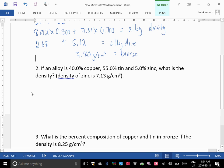So we do the density of copper, which is, in this case, it's 40%. So it would be 8.92 times 0.400. And we add that to the density of tin, which was what? 7.31, but now it's 55%. And then we add the density of zinc, which is given here, 7.13 times 0.05.